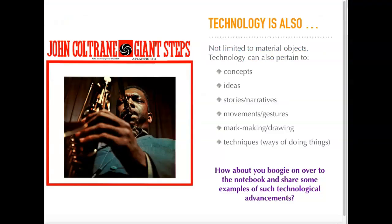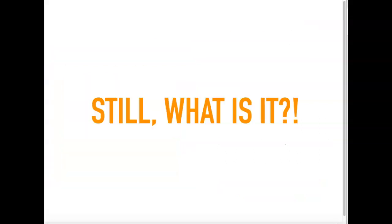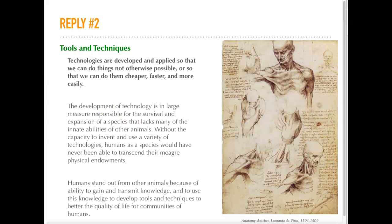Back. So far in our replies to the question of what is technology, we have come to the realization that technology is how and why we make things, and we now acknowledge that technology can also refer to non-material objects. But if you're anything like me, you're probably still feeling pretty unsatisfied — like, what is this thing that we call technology? Another reply that might be helpful is to view technology as the tools and techniques of making things. Technologies are developed and applied so that we can do things that are not otherwise possible, or that we can do them cheaper, faster, and more easily.